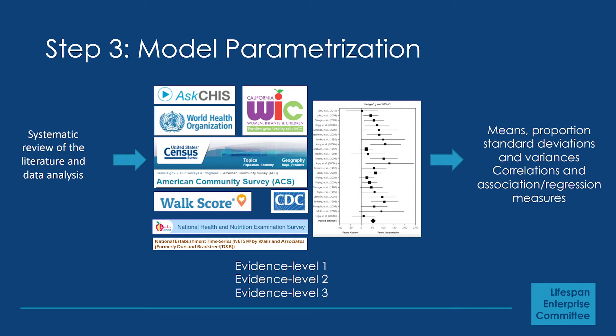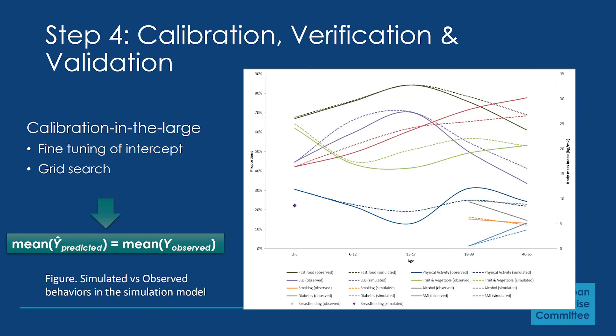We undertook a systematic review of the literature and analyzed intentional data like the WeightLoss database. We also used publicly available data from the American Community Survey, the World Health Organization, and the National Health and Nutrition Examination Survey. We conducted a meta-analysis through literature review, classified the evidence, chose the best effect estimates, and then extracted means, proportions, standard deviations, correlations, associations, and regression measures.